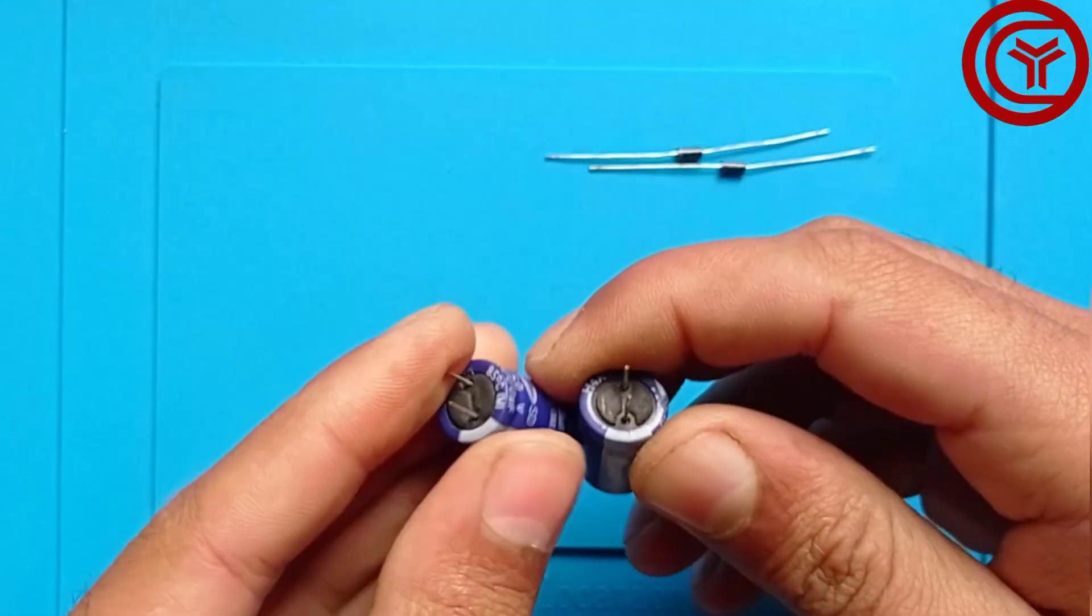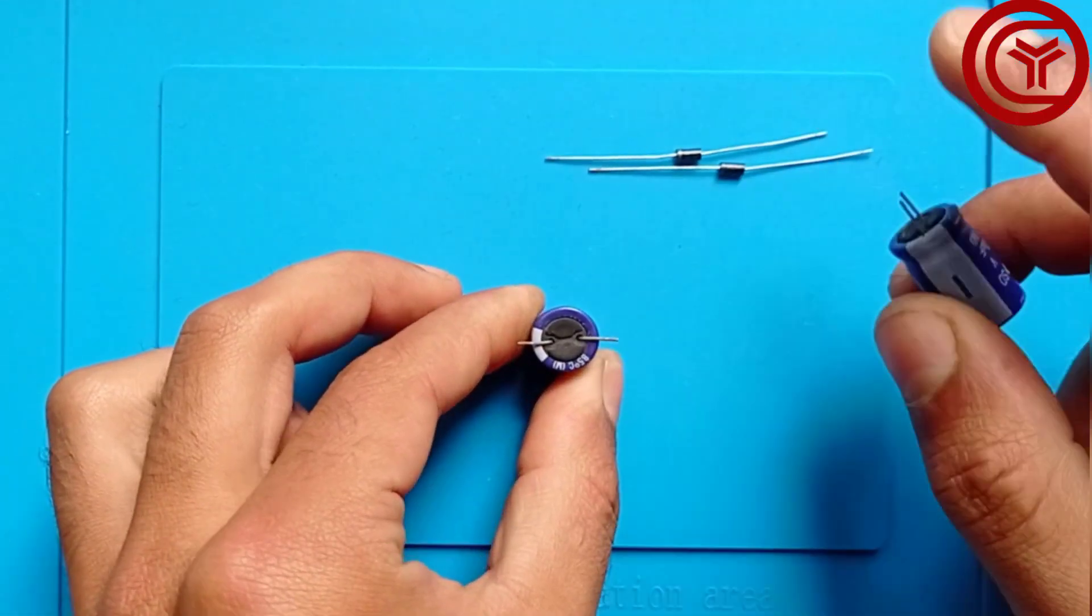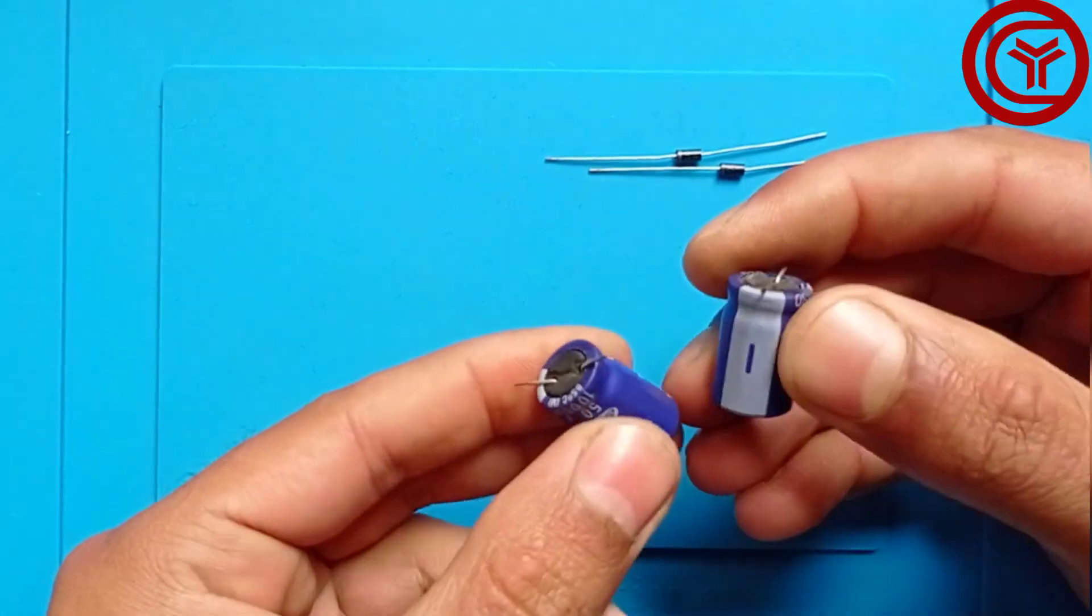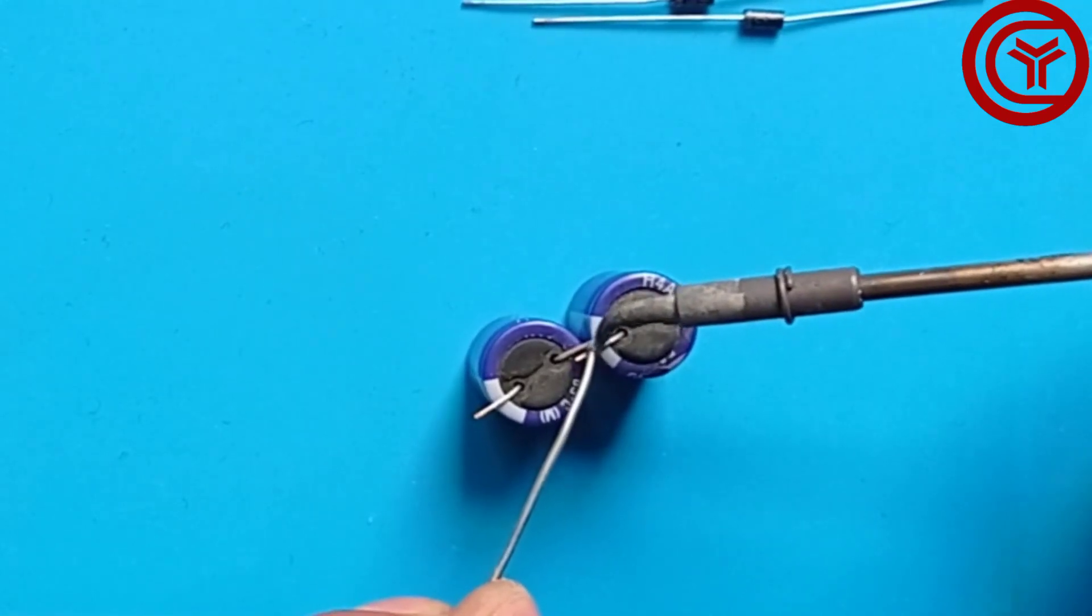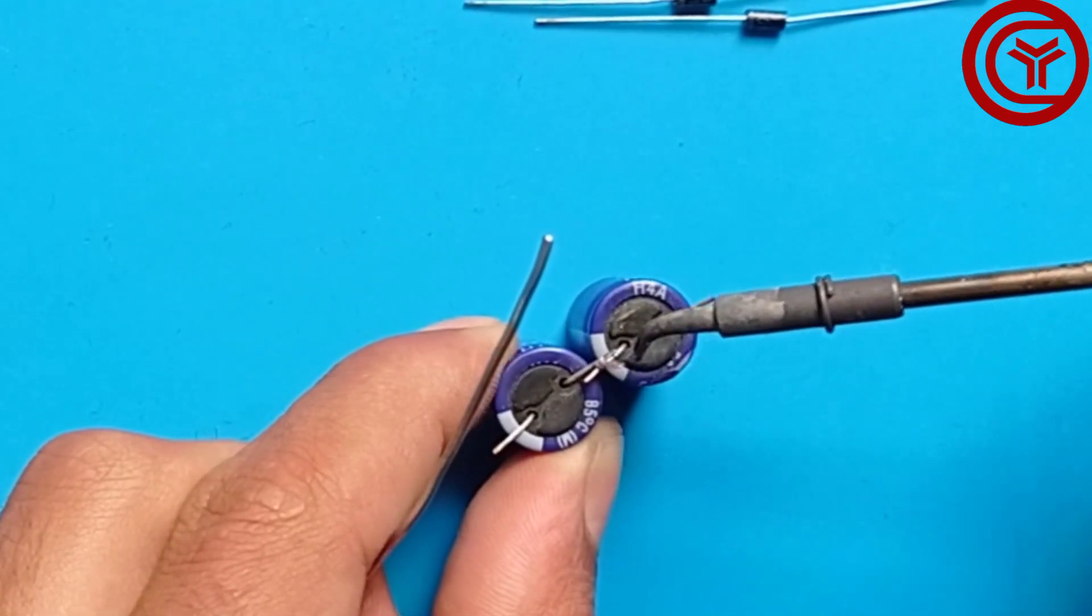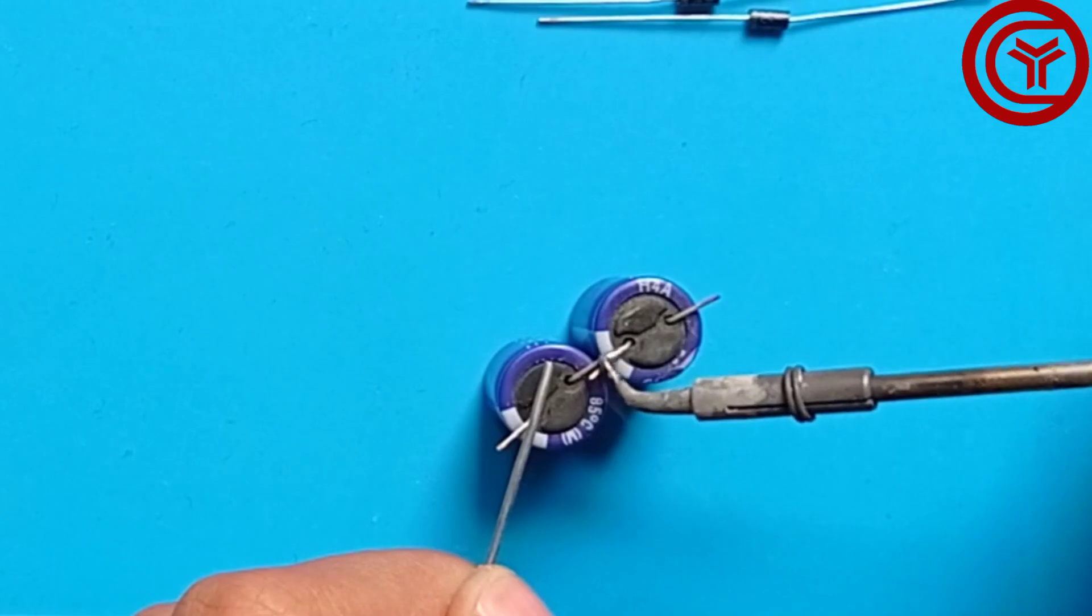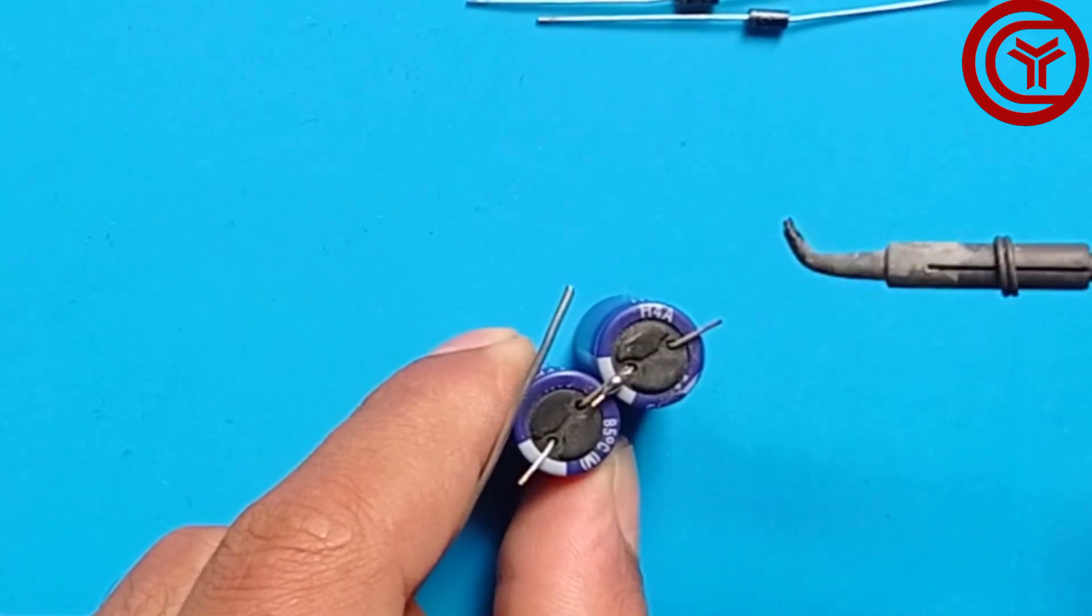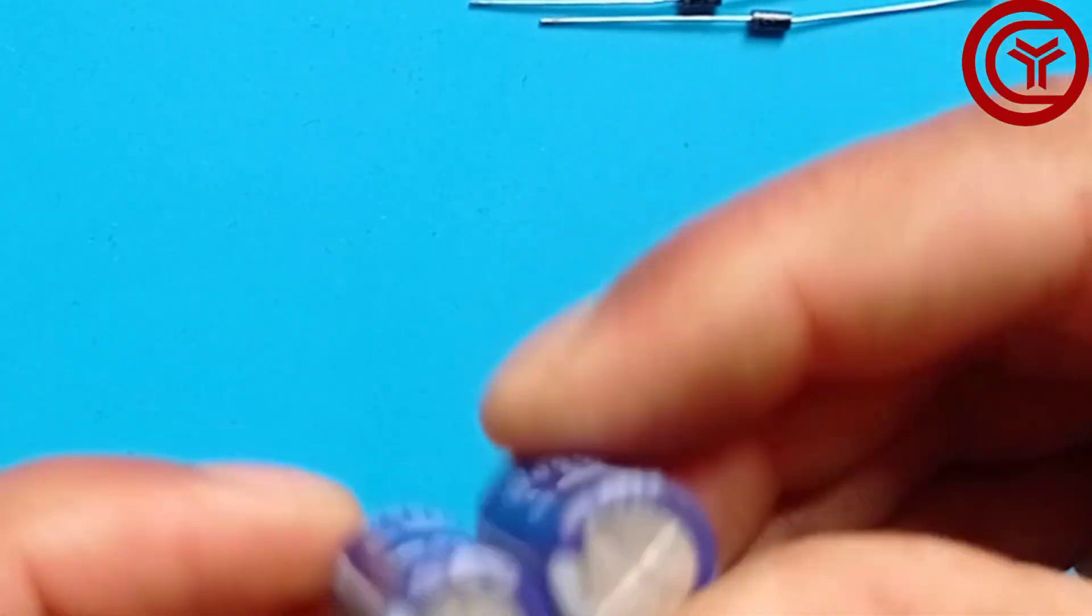We'll bend the pins of the capacitors and connect the negative of one capacitor to the positive of another capacitor. Now we have connected these two capacitors like this.